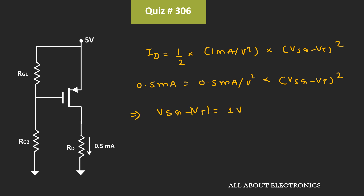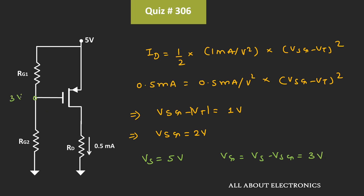Since VT is equal to 1V, we can say that voltage VSG is equal to 2V. That means the difference between the source and gate voltage is 2V. Now, VS is already equal to 5V, so voltage VG equals VS minus VSG, which is equal to 3V. The voltage at the gate terminal is therefore 3V.